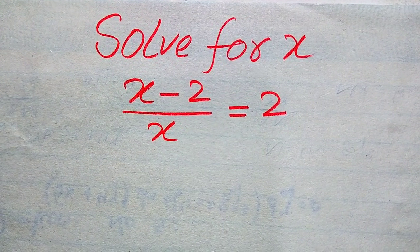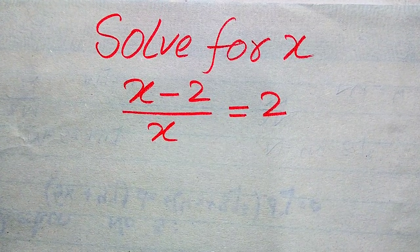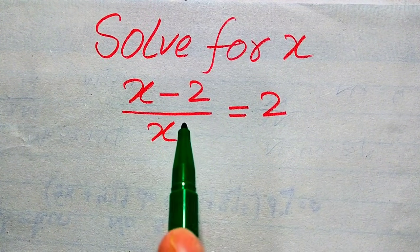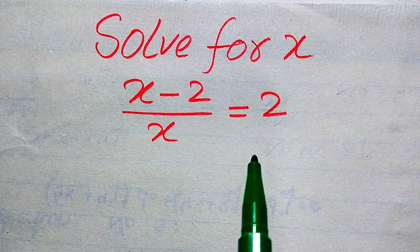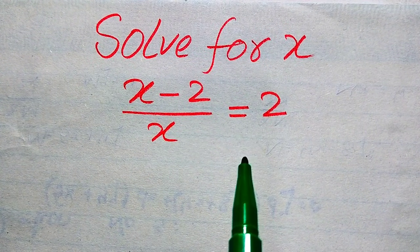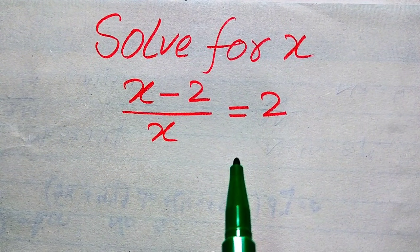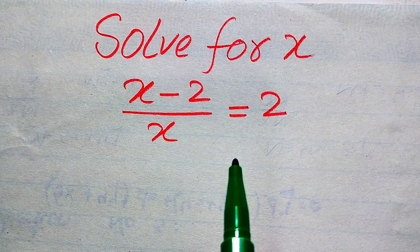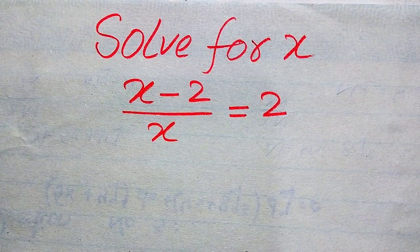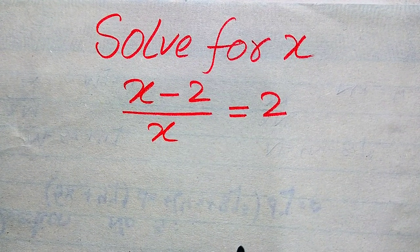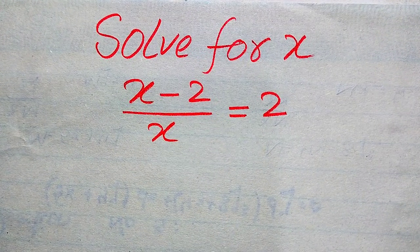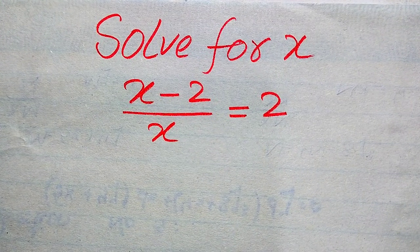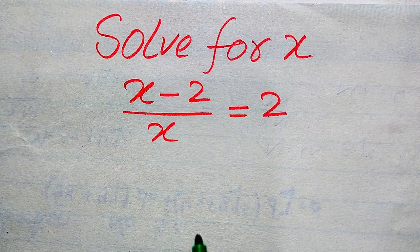Hello everyone. How to solve this problem: find the values of X if we have (X minus 2) divided by X equals 2. First we need to find all the roots of this equation, and then we will verify which of the roots satisfy the given statement — in other words, which roots are solutions and which are extraneous roots.